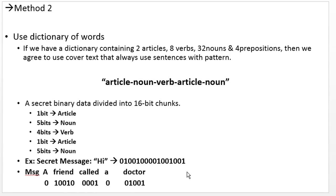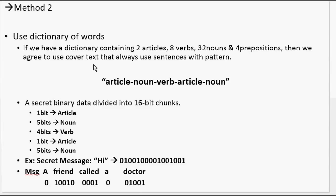The second method is to use a dictionary of words. If we have a dictionary containing two articles, eight verbs, 32 nouns, and four prepositions, then we agree to use cover text that always follows the sentence pattern: article, noun, verb, article, and noun again. That is, if we have at minimum those many values, we are allowed to use this technique. First, we have to divide the given data into chunks of 16 bits — in that, the first bit is for the article, the next five bits are for the noun, the next four bits are for the verb, the next one bit is for the article, and the last five bits are for the noun.